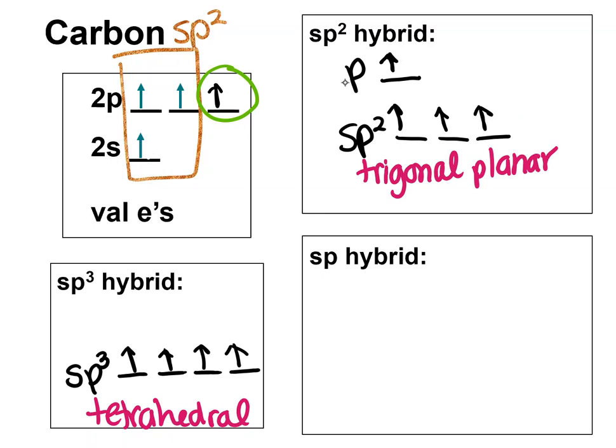Let's talk about geometries. sp2, the geometry will be three electron groups. So this is trigonal planar. And then you remember how p orbitals look. They're dumbbell shaped. They have the two lobes.